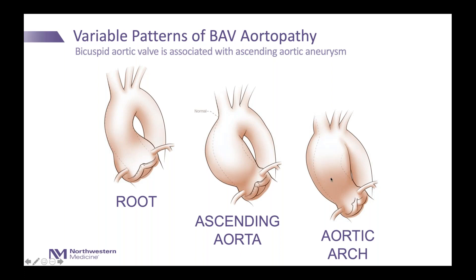A less common manifestation is where the enlargement of the aorta is not limited to just the proximal portion but extends into the arch — the candy cane of the aorta, where it takes a turn and dips down. That's an important part of the aorta where all the blood vessels that take blood to your brain are present. Involvement of that part has significant surgical implications because the surgery is more involved and extensive, including management of blood flow to the brain.